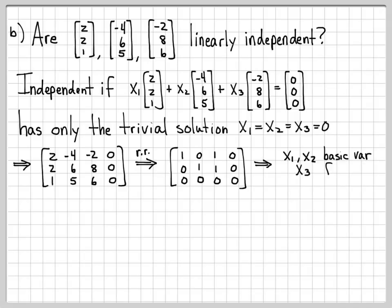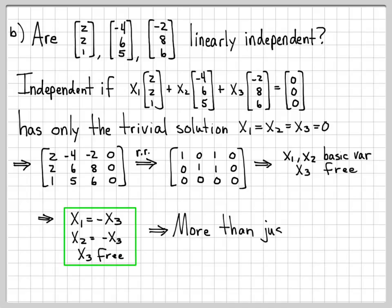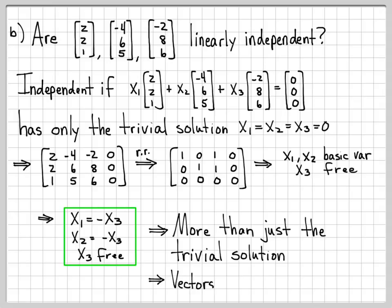x1 and x2 are basic variables and x3 is a free variable. This means x1 = -x3 and x2 = -x3, with x3 free. So there's actually a whole family of answers — an infinite collection of solutions, not just the trivial solution. Since we have more than the trivial solution, these vectors are linearly dependent. We've used the definition and shown that these vectors are indeed linearly dependent.